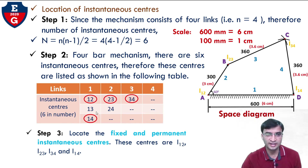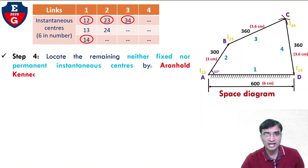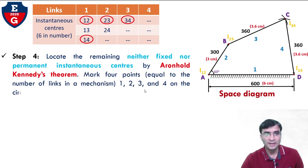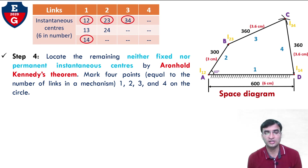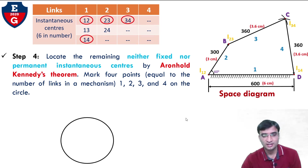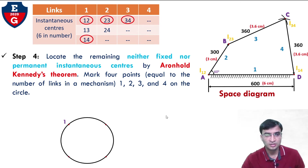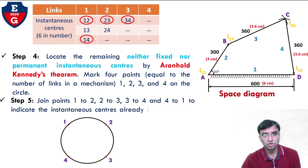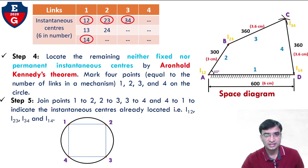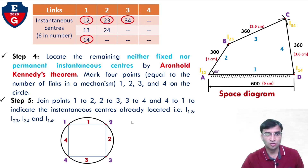Two instantaneous centers are remaining: I13 and I24. Step 4: Locate the remaining neither fixed nor permanent instantaneous centers by the Arnold-Kennedy theorem. This is a very easy theorem. Mark 4 points on a circle of random radius — points 1, 2, 3, and 4. Step 5: Join I12, I23, I34, I24, I42, and I41. Indicate the instantaneous centers already located: I12, I23, I34, and I14. This method is called the Arnold-Kennedy theorem.